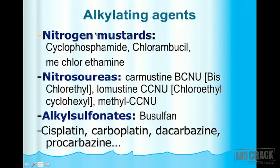The alkylating agents include nitrogen mustards: cyclophosphamide, chlorambucil, and mechlorethamine. Nitrosoureas include carmustine (BCNU — bischloroethyl nitrosourea) and lomustine (CCNU — chloroethyl cyclohexyl nitrosourea) and methyl CCNU. Alkyl sulfonates include busulfan. Related alkylating agents include cisplatin, carboplatin, dacarbazine, and procarbazine.